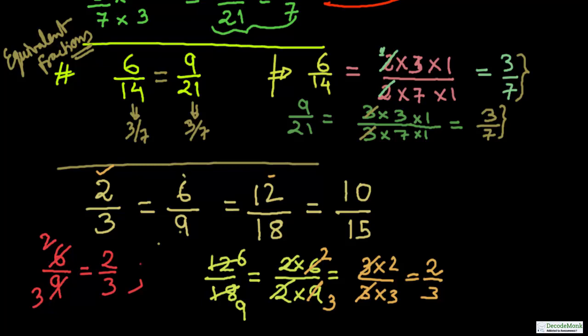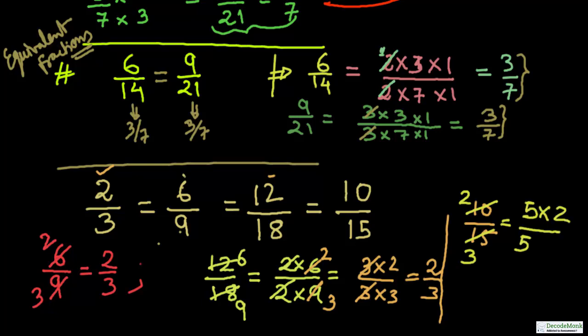6 upon 9 also equals 2 by 3. For the last one, 10 upon 15: the numerator ends in 0 and the denominator ends in 5, so both are divisible by 5. We write 5 twos are 10 and 5 threes are 15. Cancelling the common factor 5, what remains is 2 by 3. So all the fractions reduce to 2 by 3, and therefore they are all equivalent fractions.